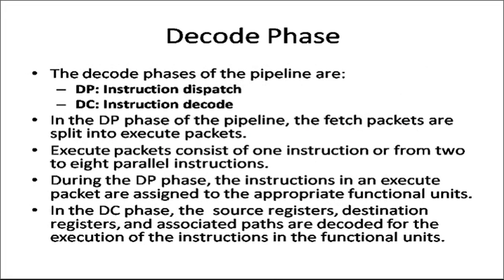Now there are two phases for the decode stage. These are instruction dispatch and instruction decode — DP and DC. First an instruction is dispatched, then it is decoded. Once decoded, the CPU understands what it needs to do with those instructions, and finally execution begins.